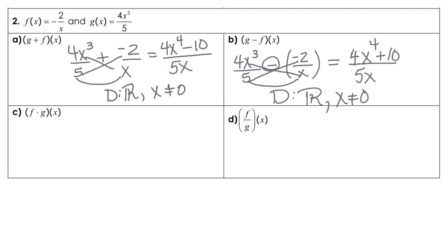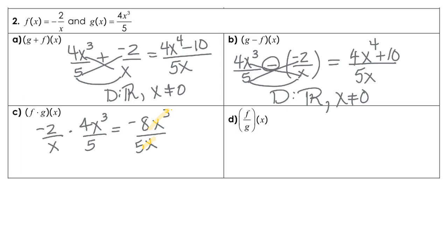For part c, you're multiplying these, so we're going to have negative 2 over x times 4x cubed over 5. Notice if we multiply across top and bottom, we have negative 8x cubed over 5x, and now we should be able to cancel the x's because we are multiplying. When you reduce that down, it looks like you're going to have negative 8x squared over 5. Checking our denominator, there's no way to change that 5 to a 0, so this domain will be all real numbers.